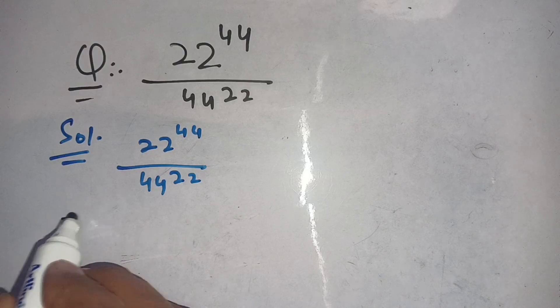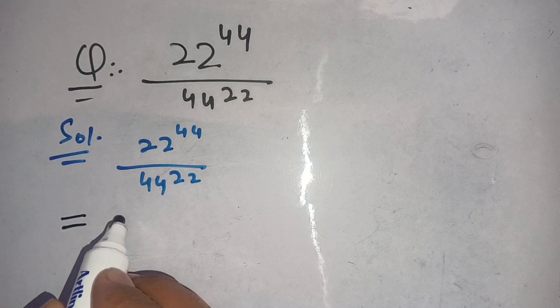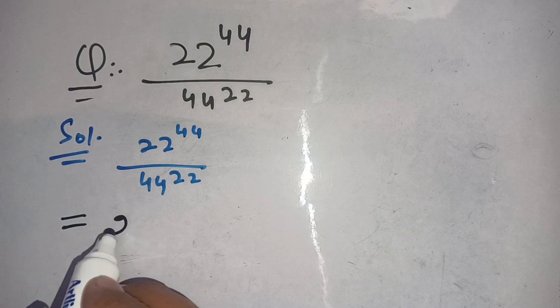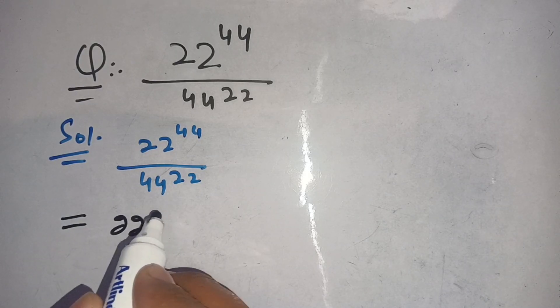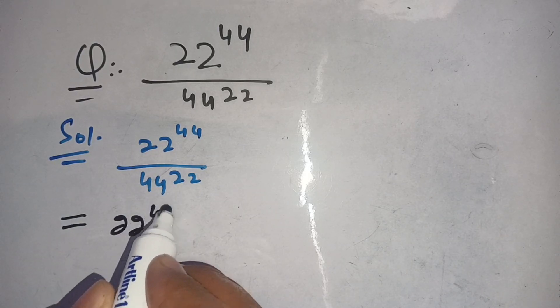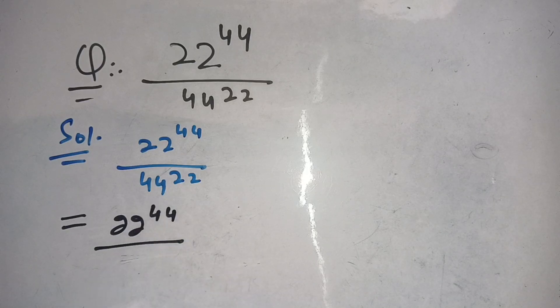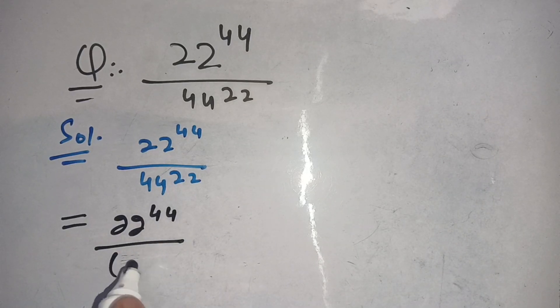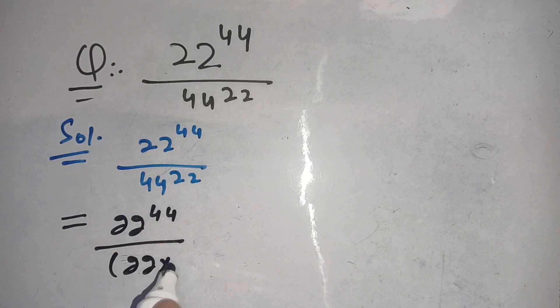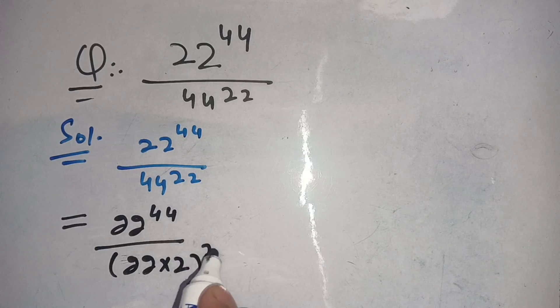In the next step we write down 22 power 44 divided by 44, where 44 can be written as 22 times 2, and whole power 22.